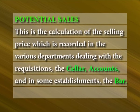Potential sales: This is the calculation of the selling price recorded in the various departments dealing with requisitions — the cellar, accounts, and in some establishments the bar. All items issued to the bar are valued along with the cost price and the selling prices also. This value of the selling price before actual sales occurs is termed as the potential sales. To keep a check on bar performance, the potential sales is compared with the actual sales, and variance is analyzed.